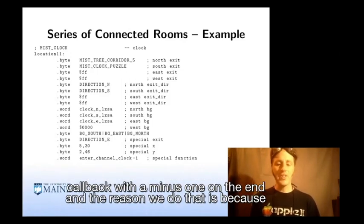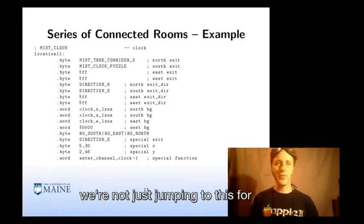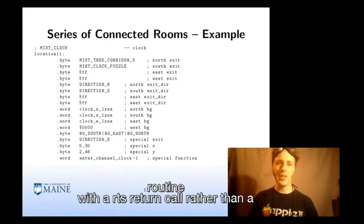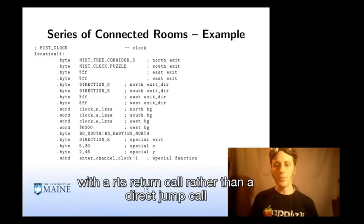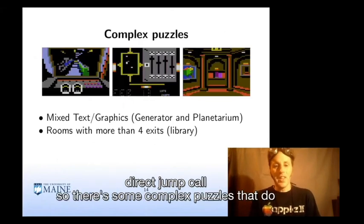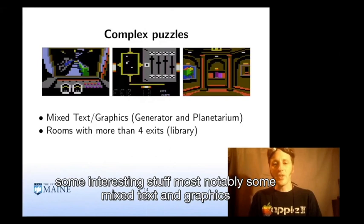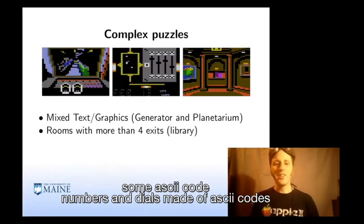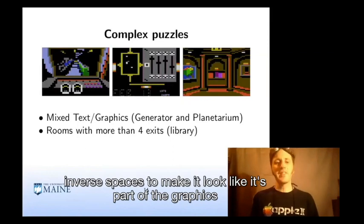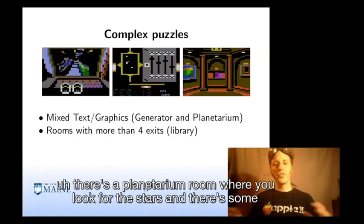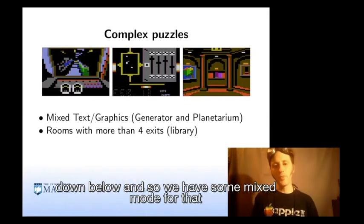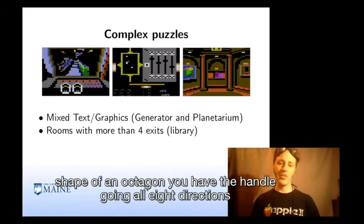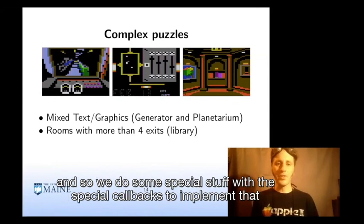The callback uses a minus-one on the end because of a 6502 bug — we actually jump to the helper routine with an RTS return call rather than a direct jump. Some complex puzzles do interesting stuff, most notably some mixed text and graphics. The generator puzzle has ASCII numbers and dials made of ASCII codes, and we use inverse spaces to make it look like part of the graphics. There's a planetarium room with stars and complicated logic, showing some text below in mixed mode. Some rooms have more than four exits — notably the library is octagon-shaped, so you handle going all eight directions using special callbacks.